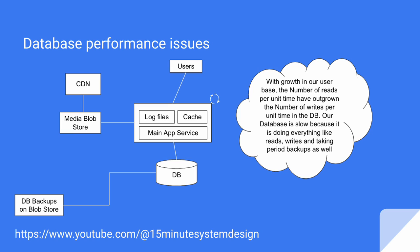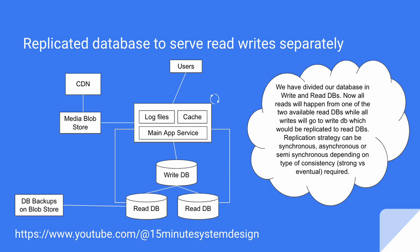We onboarded more and more global users, and one day we realize our database performance has gone down significantly because the number of reads has outgrown the number of writes. The database is slow because it has to handle reads and writes together, and the load is even higher when a backup is in process. Time has come to scale reads and writes independently. We divide our database into separate read and write DBs — all reads come from one of two available read DBs, while all writes go to the write DB, which is then replicated to the read DBs. The replication strategy can be synchronous, semi-synchronous, or asynchronous, depending on whether we want strong or eventual consistency.